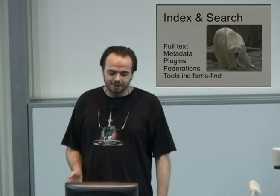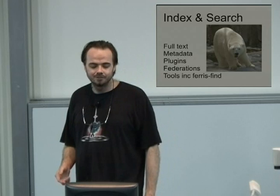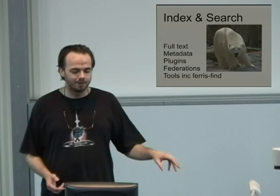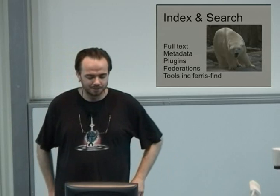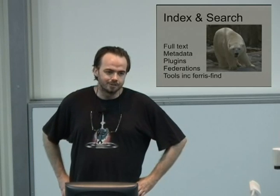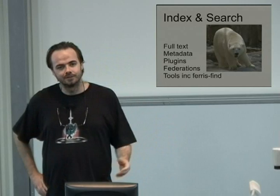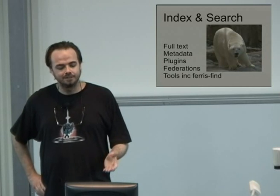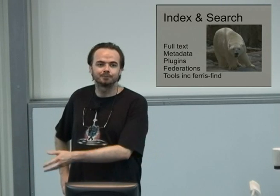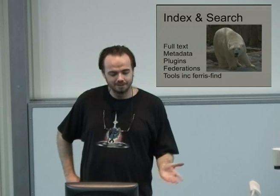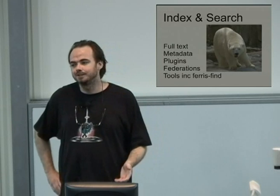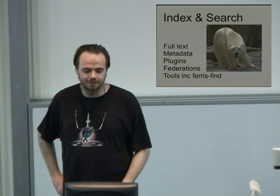Ferris Find operates like POSIX Find, except it operates on an index rather than directly trawling the file system looking for your predicate. So instead of doing find and then trying to limit what URL you're searching in, you can just do Ferris Find, slash, and whatever your predicates are, and it'll come back. If the predicate is selective enough — like if you're looking for something with one specific MD5 — it'll obviously come back within a second.